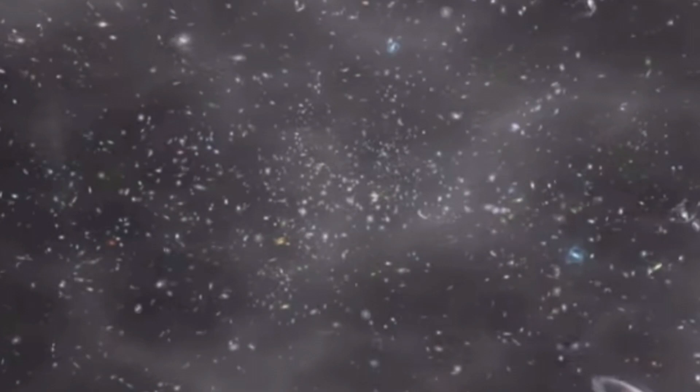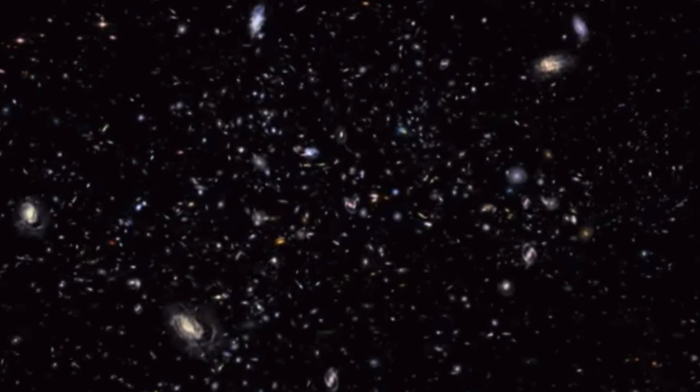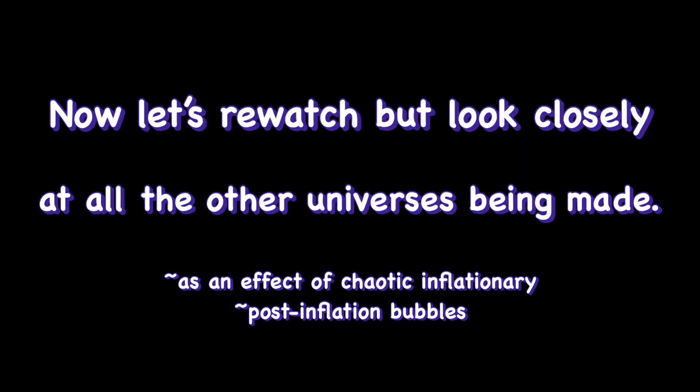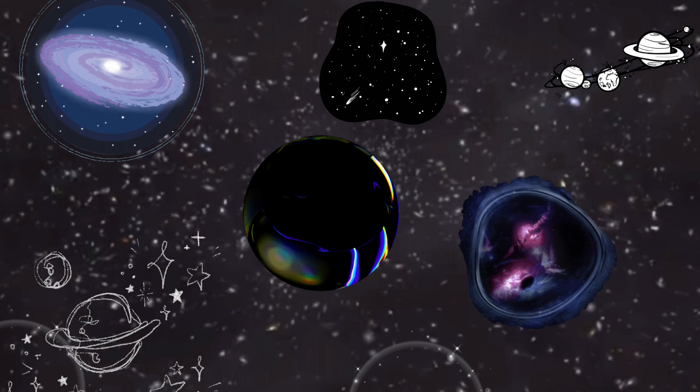The Big Bang creates post-inflation bubbles. These bubbles are an effect of chaotic inflationary theory of cosmology. This theory claims that quantum fluctuations after the Big Bang created inaccessible pockets of space, each being its own universe. Unlike Level 1 universes, these universes have a chance to have other dimensions such as a 4th dimension, and they might have different particles that are dimensional.